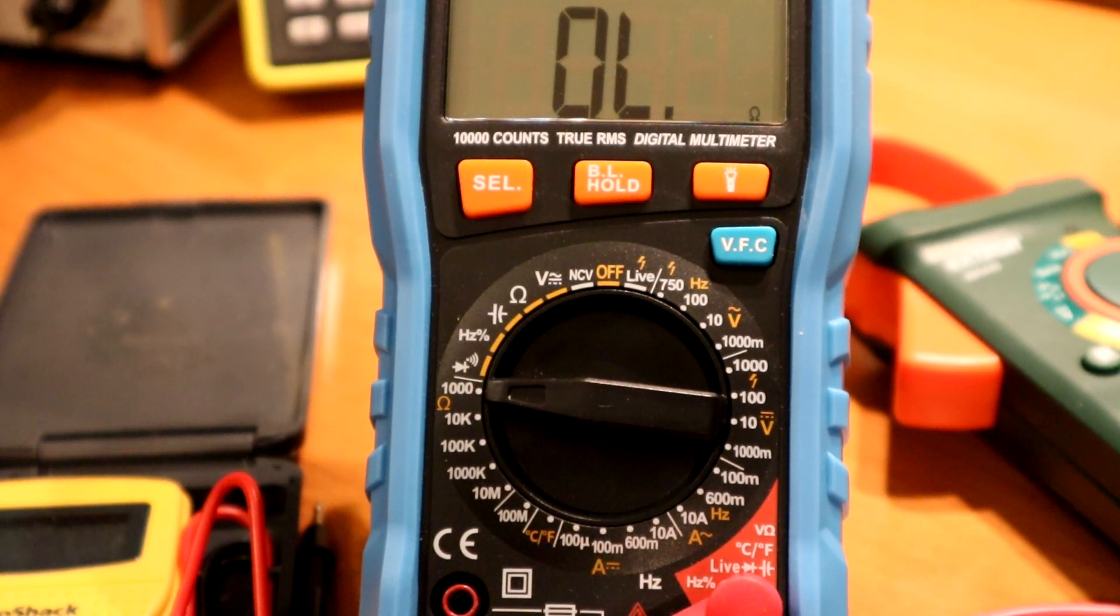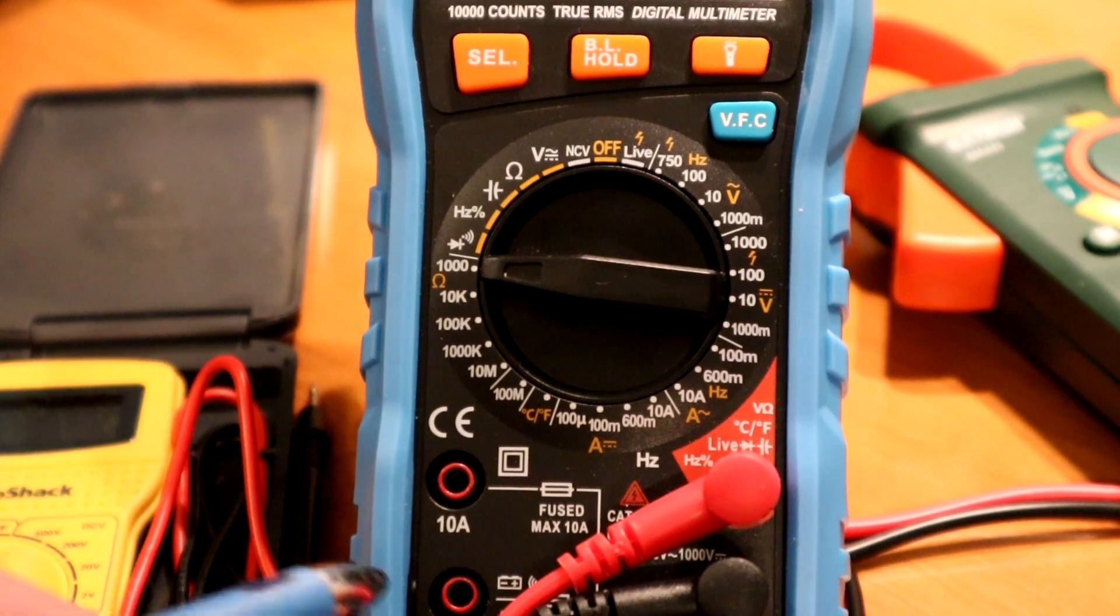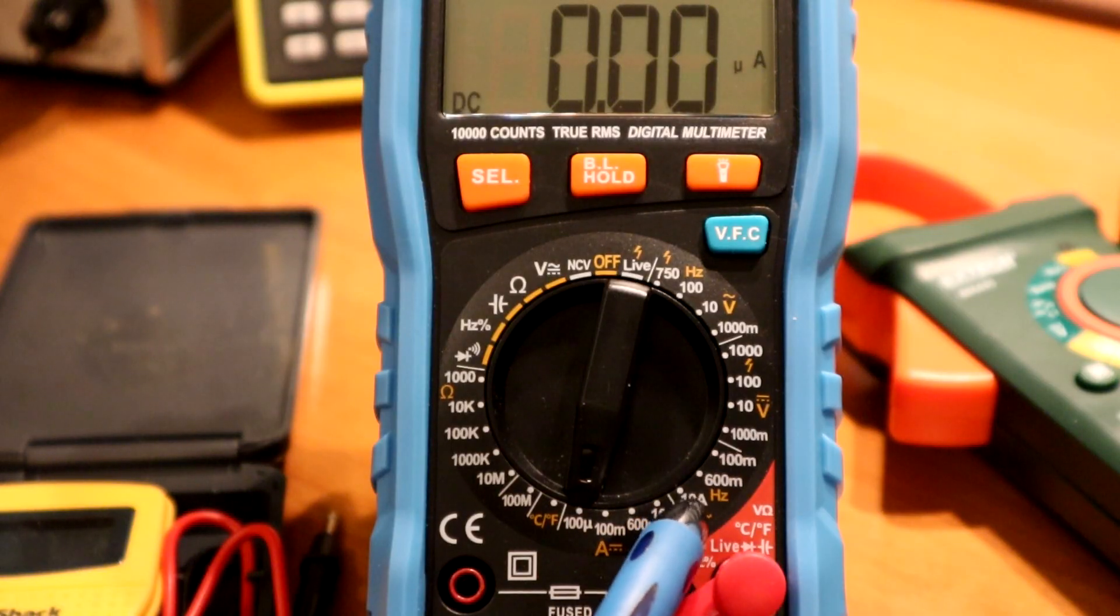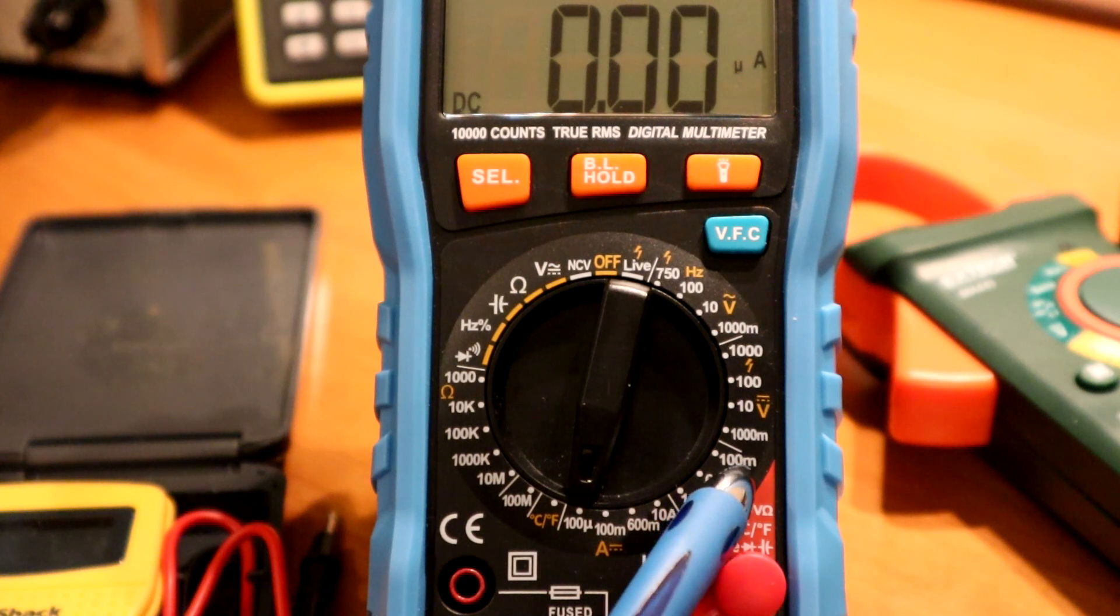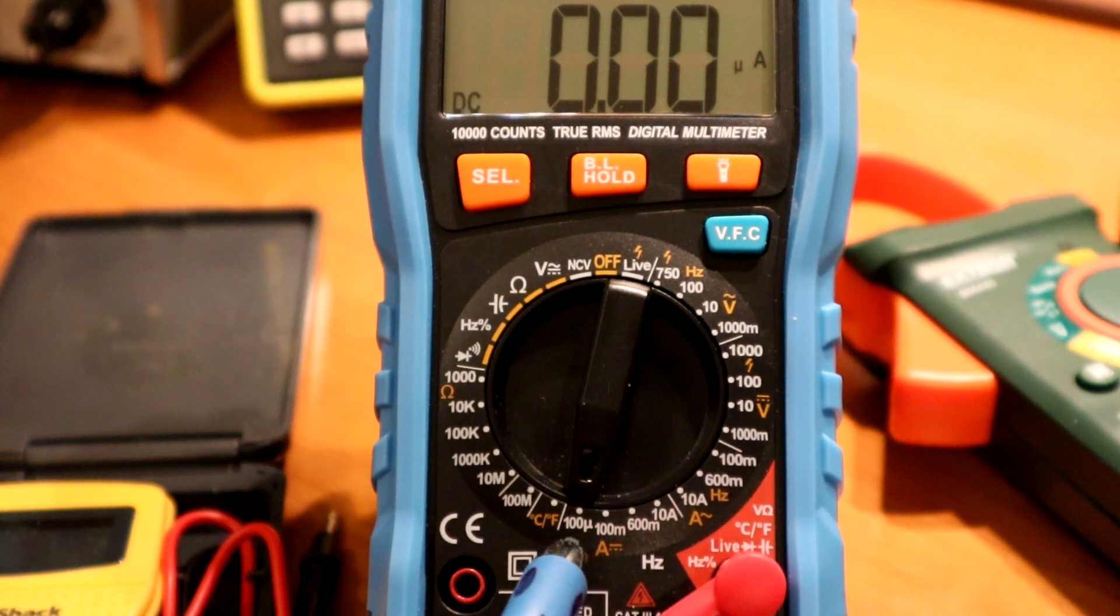Of course, like most multimeters, the 10 amp is a separate plug-in for that. The other range, the lower ranges, you have to plug in to down here. There's an AC amps range over here, from 10 amps down to 100 milliamps. DC allows you to go down to 100 microamps. That's interesting.